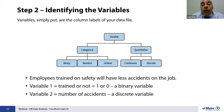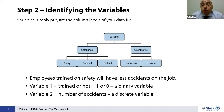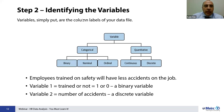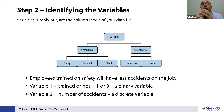'Employees trained on safety will have fewer accidents on the job' suggests two variables: one is whether an employee is trained or not, and the other is the number of accidents that happen to an employee. Think of the variables as column labels in your data file. Once you collect the data, the variables become the column titles. This step is very important because, depending on the type of variable, we will be able to apply some statistical tests but not others.